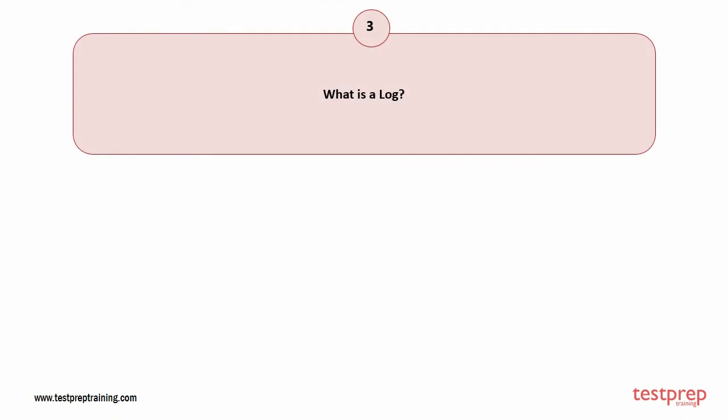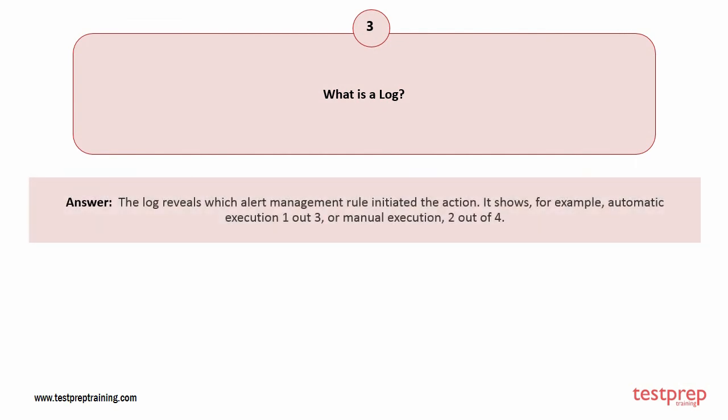Question number 3: What is a log? The log reveals which alert management rule initiated the action. It shows, for example, automatic execution 1 out of 3, or manual execution 2 out of 4.